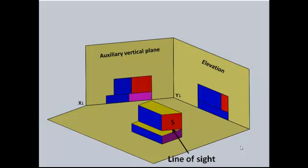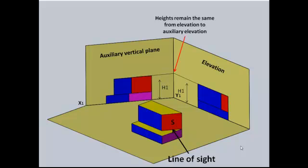To draw this auxiliary elevation we project our points out from our object parallel to the line of sight. Then we can take our heights from our elevation which will remain the same for the auxiliary elevation and draw our true shape of surfaces.